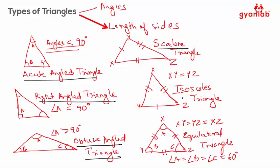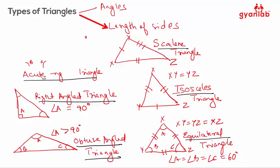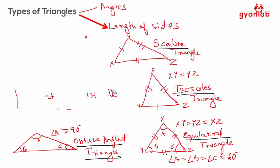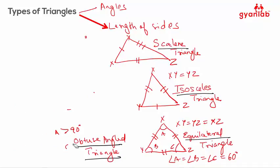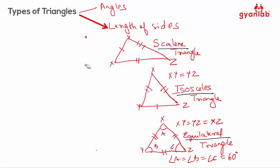So based on the lengths of sides, you can classify triangles as scalene, isosceles, and equilateral. I hope you've understood the definitions of the various types of triangles. We'll now try and solve a few questions to figure out what these triangles are, which makes it an easier process to remember.